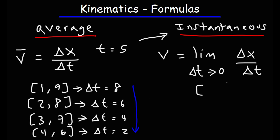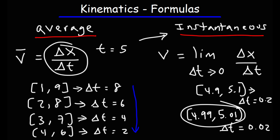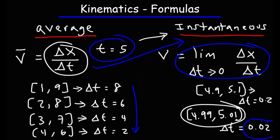For instance, using an interval of 4.9 to 5.1, with 5 as the center, gives delta t of 0.2. Using 4.99 to 5.01 gives delta t of 0.02 — very close to zero — which provides an even better approximation of the instantaneous velocity at t equals 5. The closer delta t gets to zero, the better the approximation. That's how you use limits to approximate instantaneous velocity: make the interval as small as possible, centered on the point you want.